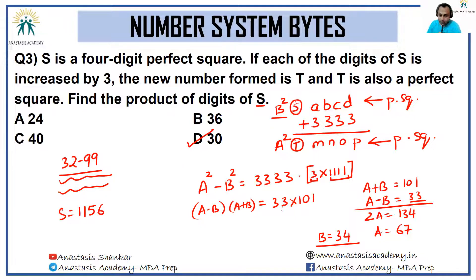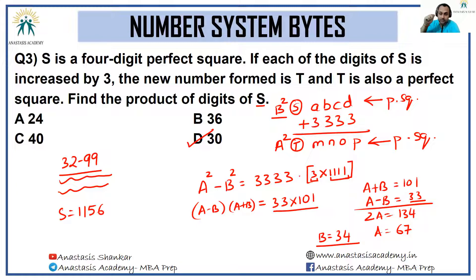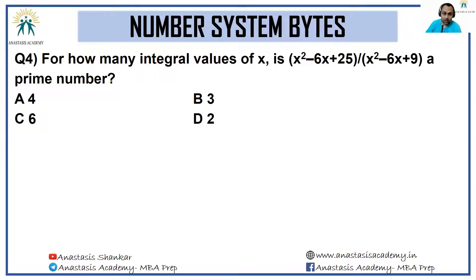As soon as I found an acceptable pair I dropped anchor, because all four options are precise values. Had there been an option of 'cannot be determined' I would have checked for more pairs. But since all four options are precise, I don't need to verify if more cases exist — if more cases existed, the question would be wrong and everyone would get full marks.